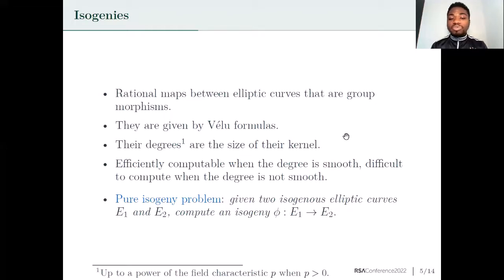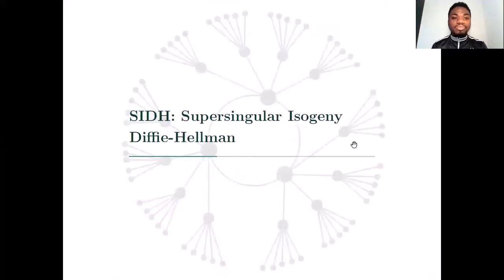The pure isogeny problem is the following: you are given two isogenous elliptic curves E1 and E2, and you are asked to find an isogeny between E1 and E2. In general, this is not the problem underlying the security of isogeny-based schemes, and especially in SIDH where you are given more information than just the starting curve and the end curve.